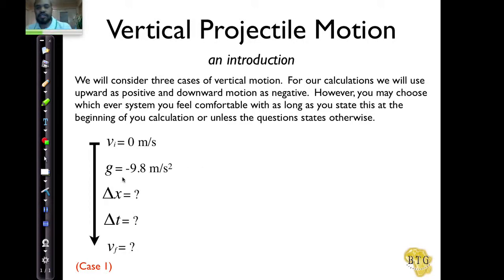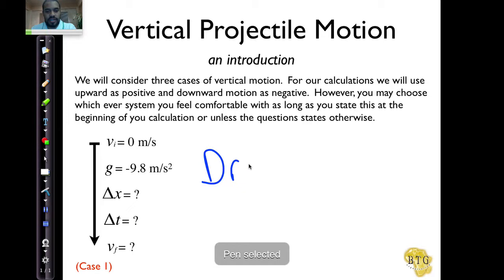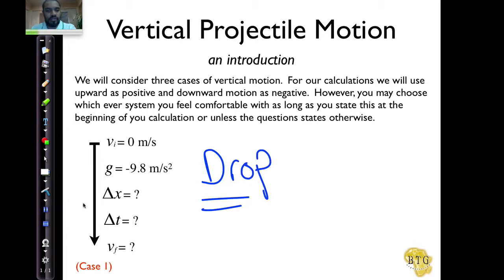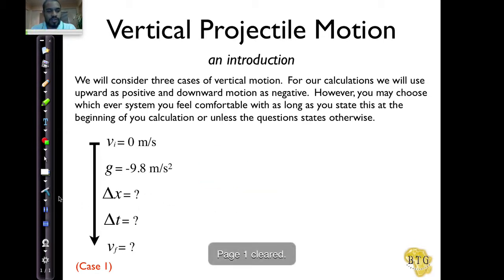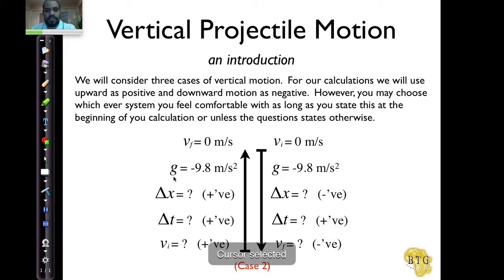Welcome back to Vertical Projectile Motion. What we've previously seen is that we spoke about Case 1, which we called the drop case — the case in which something is dropped. And then we spoke about Case 2, which is where we throw up from a reference point and it goes up to a maximum height.